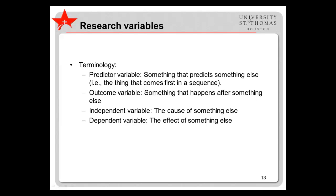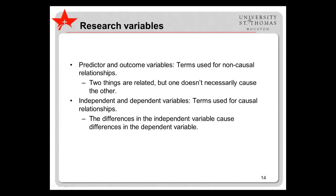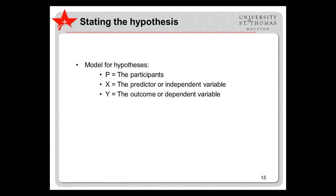As we dive further into the details of hypotheses, we must cover a few more terms. A predictor variable is something that predicts something else — the thing that comes first in a sequence. An outcome variable is something that happens after something else. An independent variable is the cause of something else, and a dependent variable is the effect of something else. The first two terms are used for non-causal relationships, while the second two are used for causal relationships, where differences in the independent variable cause differences in the dependent variable.